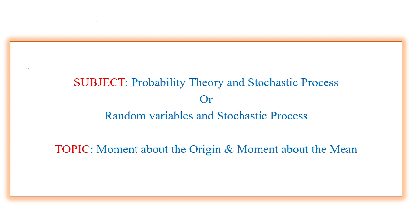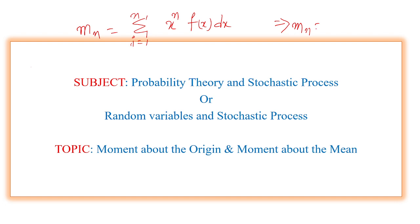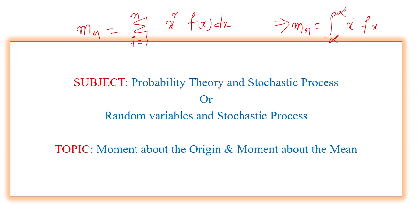Moment about the origin is denoted with μₙ. The nth moment is defined as moment about the origin, denoted as: sigma from i equals 1 to n of x power n into f(x) dx. This is for discrete random variable. If it is a continuous random variable, the moment about the origin is defined as the integral from minus infinite to plus infinite of x power n multiplied with f(x) dx.